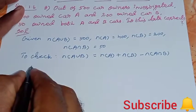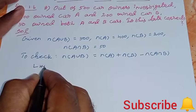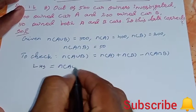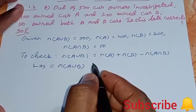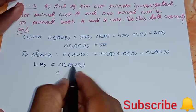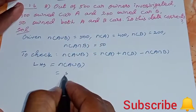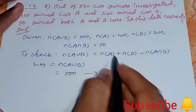Check the question. First, left hand side, n of A union B. So n of A union B, what value? 500. This is left hand side.